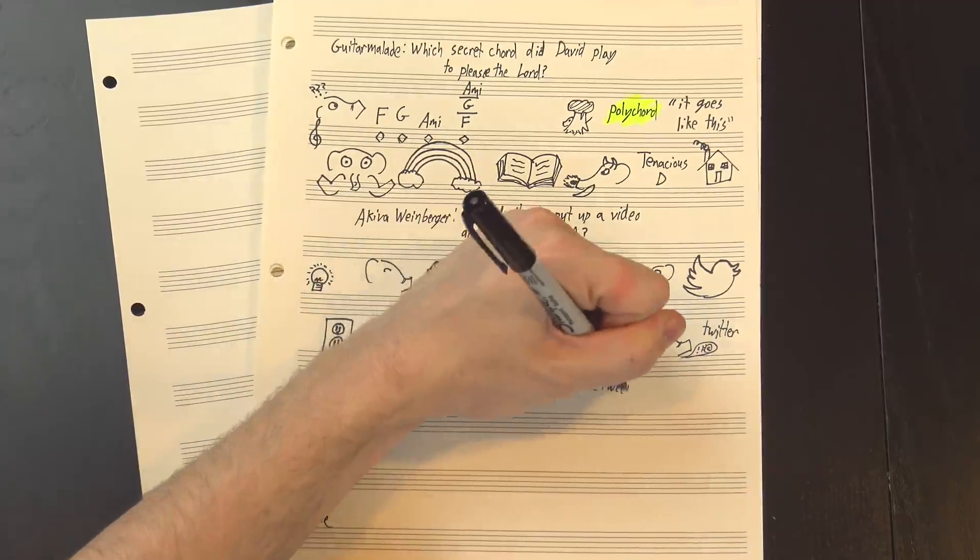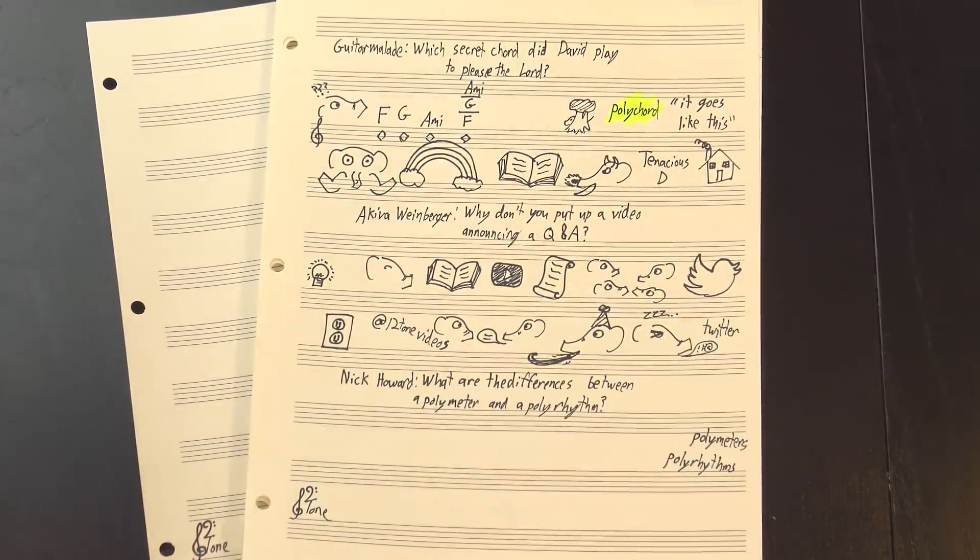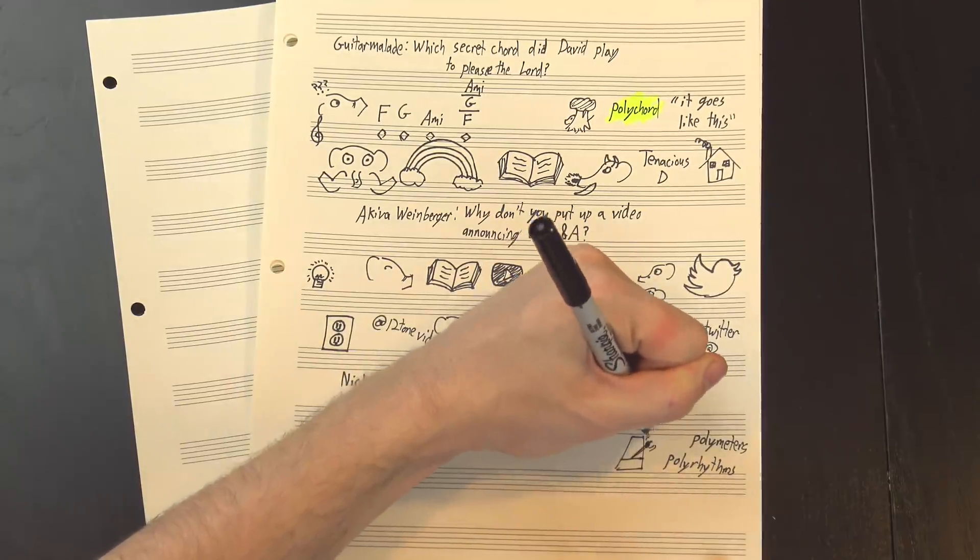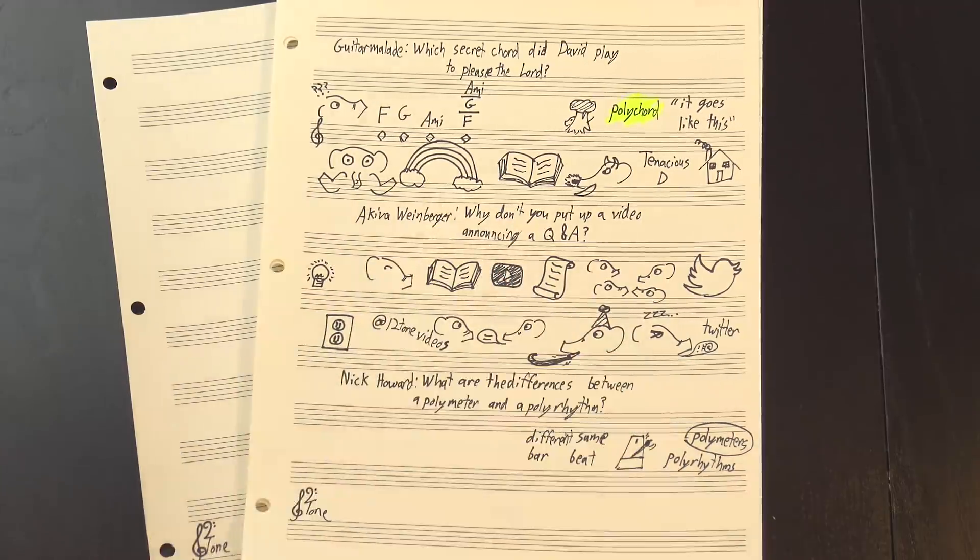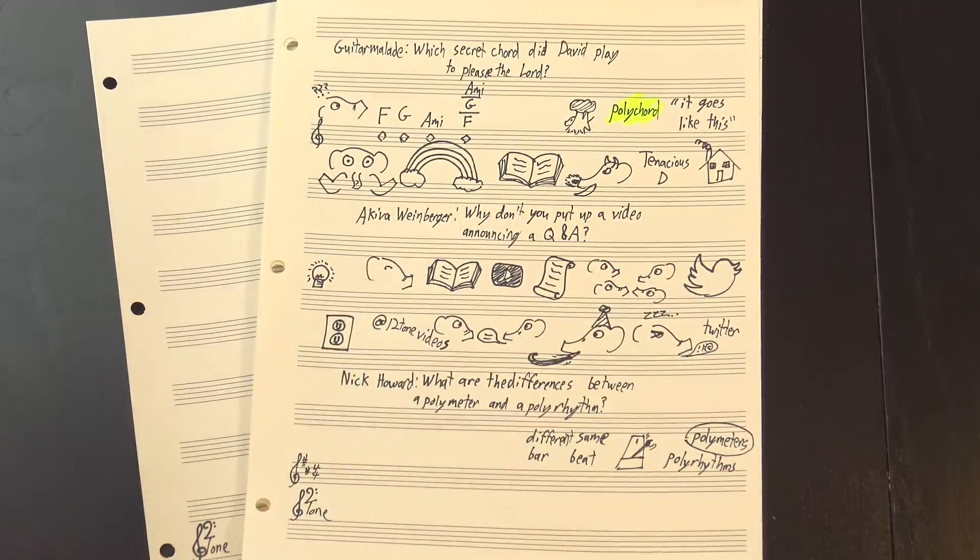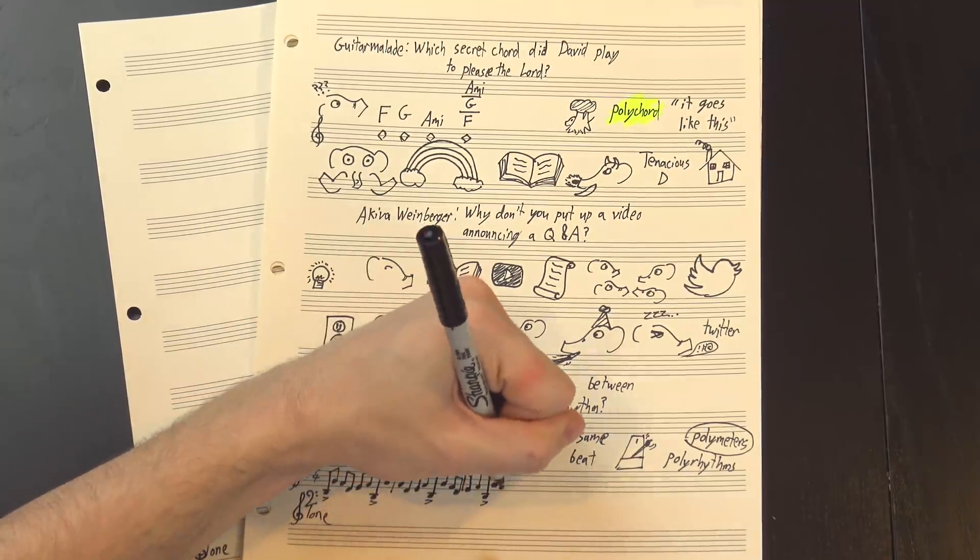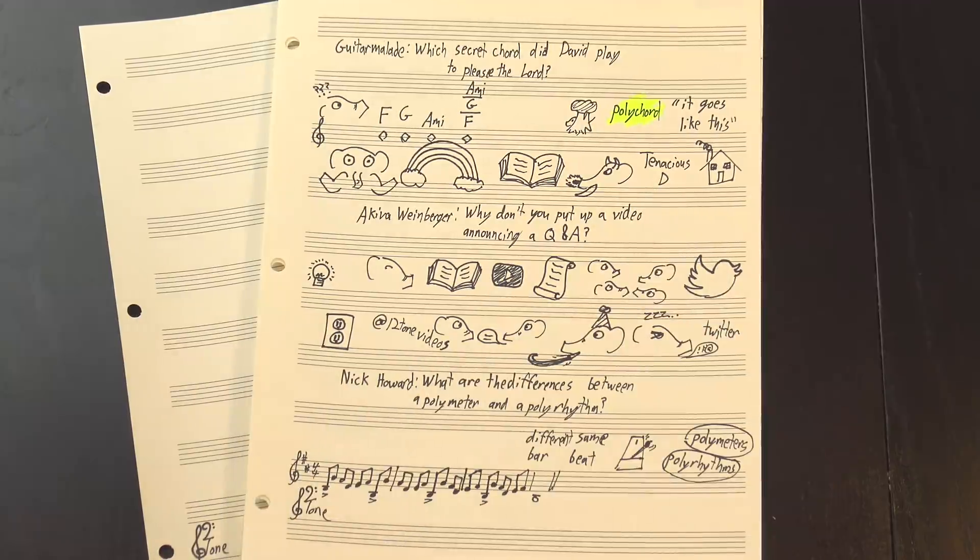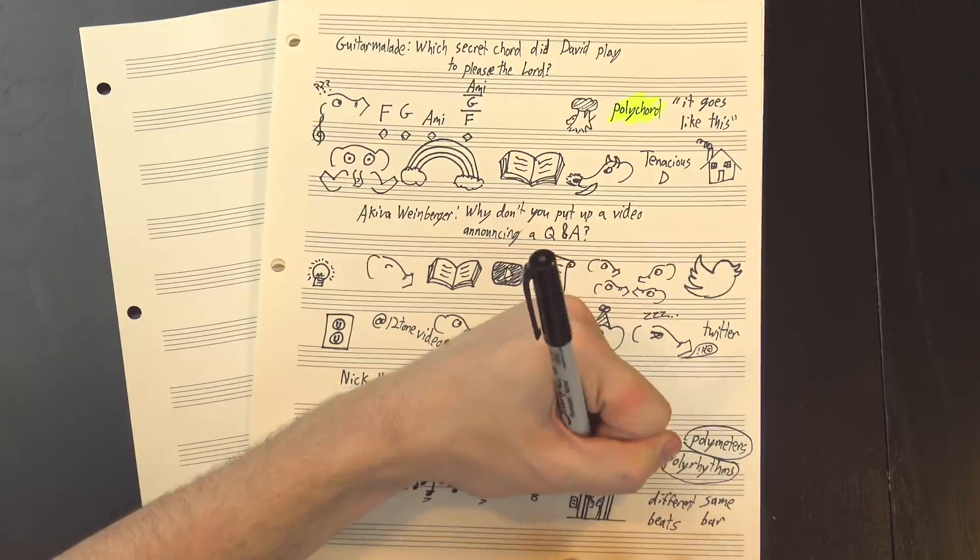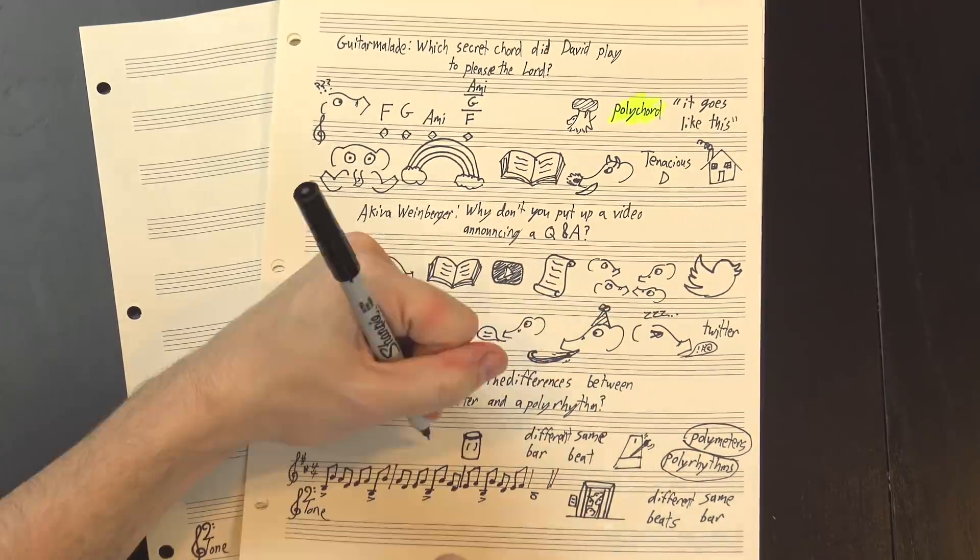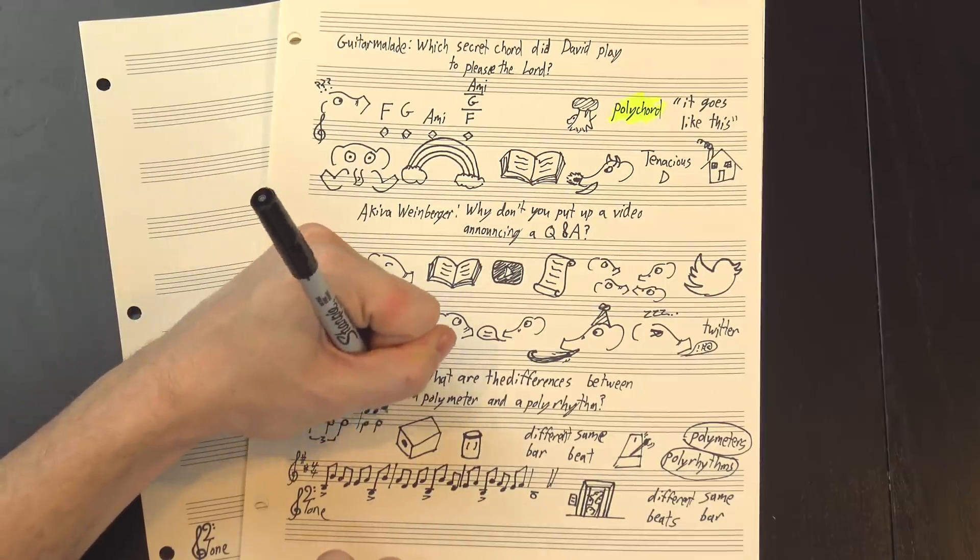Guitarmalade asked, which secret chord did David play to please the Lord? It's hard to say. Cohen says it goes like this, but then plays three different chords while he's describing the structure. Maybe it's a polychord, maybe the answer is it's F major, G major, and A minor all played at the same time. Or maybe it's like that Tenacious D song, they couldn't remember the greatest song in the world, so instead they just played a tribute. Maybe the secret chord is supposed to be secret, and Cohen knows better than to actually tell us what it is, so he just plays some similar things to give us a sense of what it might be like if we were allowed to hear it. We'll probably never know for sure. Next!